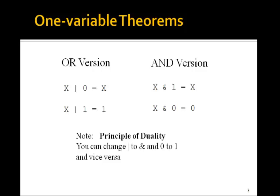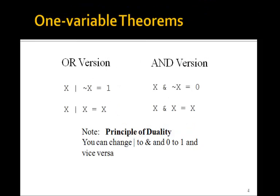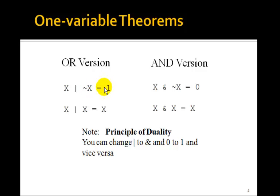So these one-variable theorems are easy to verify. Here are a couple more: x OR NOT x is equal to 1. One of them has to be 1 — if x is 0, the other one is 1. So this is true. x OR x is equal to 1 — they're both 0 or both 1.